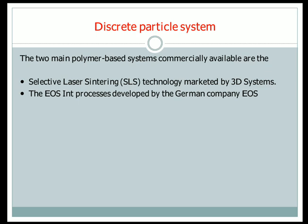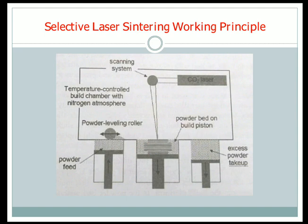We shall now discuss the Selective Laser Sintering method working principle. In the figure, there are three tables. In the middle table, the laser beam is hit on the polymer powder, heating a specific amount of powder which then becomes solidified. On the left side there is a powder feed that continuously supplies polymer powder required for manufacturing. On the right side there is a chamber that collects the excess powder from the middle chamber.